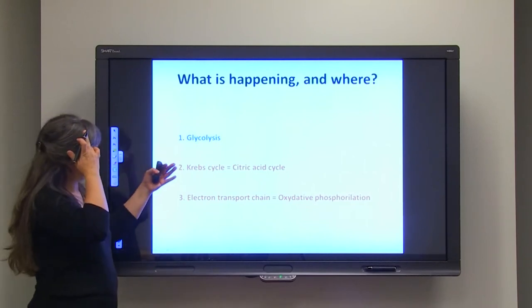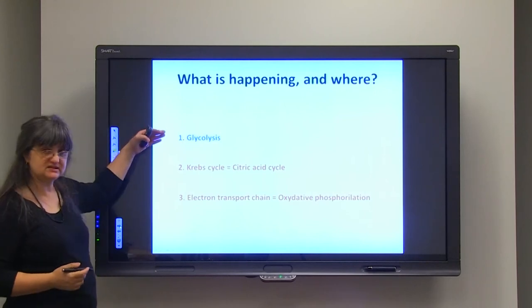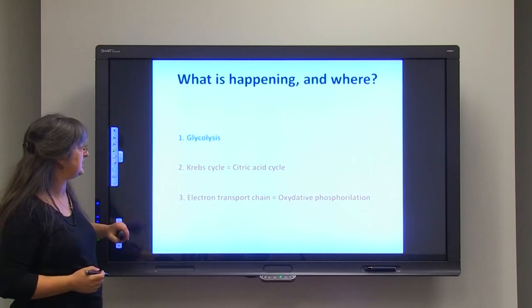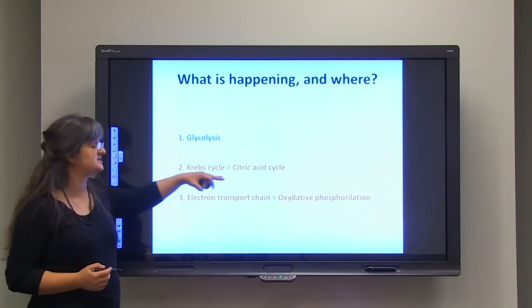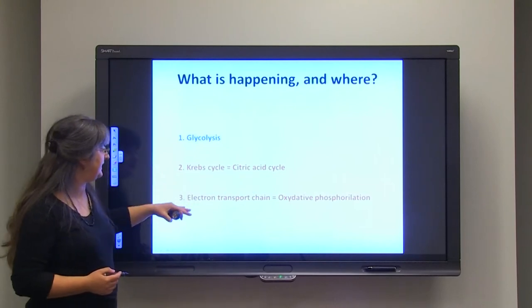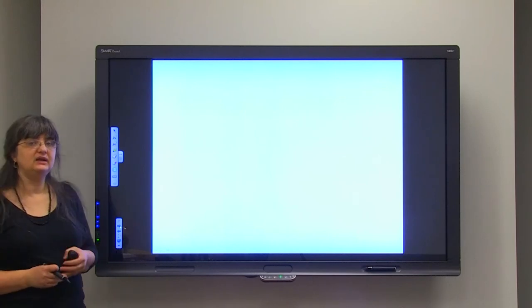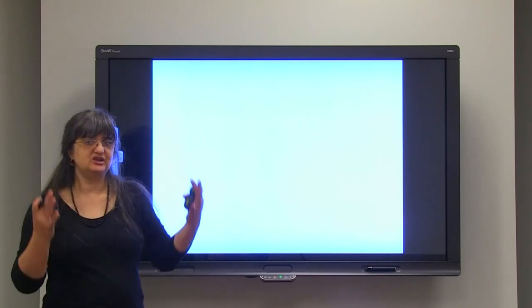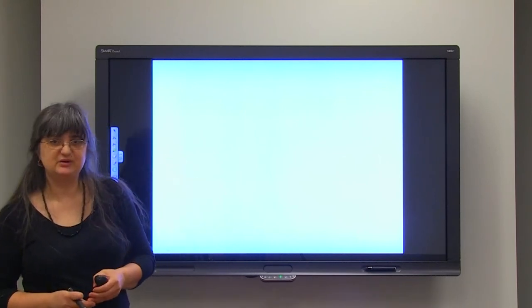So, let's see. Here are the parts. So, glycolysis is the first portion of breaking down the glucose. Krebs cycle or citric acid cycle. And electron transport chain or oxidative phosphorylation. That would be general about cell respiration.